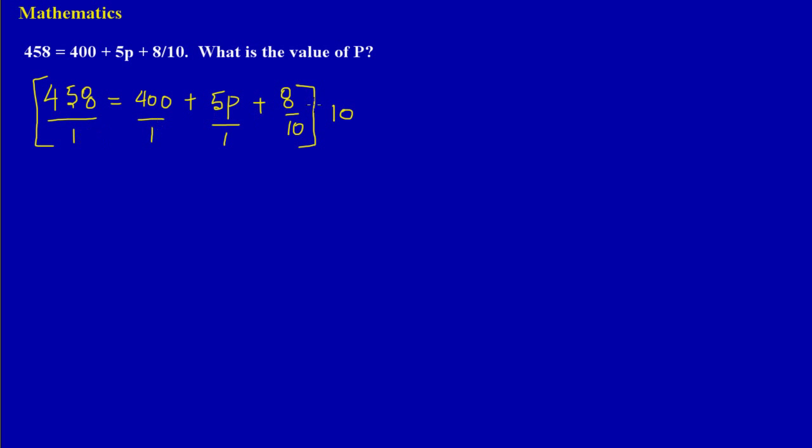So I'm going to say 1 into 10 goes 10 times, and 10 times 458 will give me 4580. If you notice, I have a positive sign here, so I'm going to put back that. Again, I'm saying 1 into 10 goes 10 times, and 10 times 5p will give me 50p. And here, I would have 10 into 10 goes one time, and 1 times 8 is 8. So all I did was to divide through by my lowest common denominator just to get rid of all of my fractions.